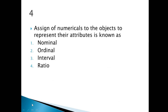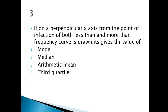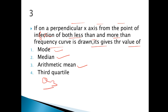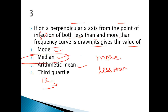Third question: if one of the perpendiculars on the x-axis from the point of inflection of a 'less than or more than' frequency curve is drawn, it gives the value of — mode, median, arithmetic mean, or quartile 3? Remember: whenever the wording says 'more than' or 'less than,' our answer will be median. So the correct option is option number 2.